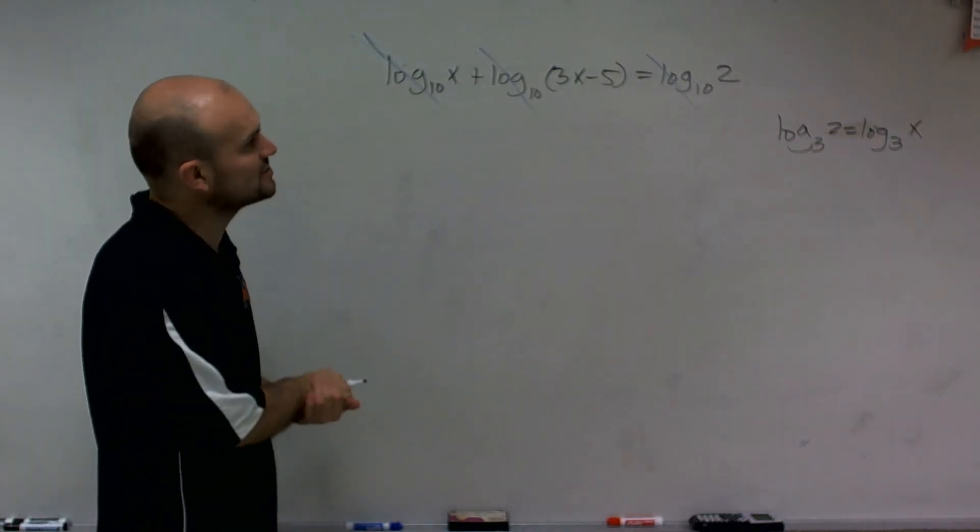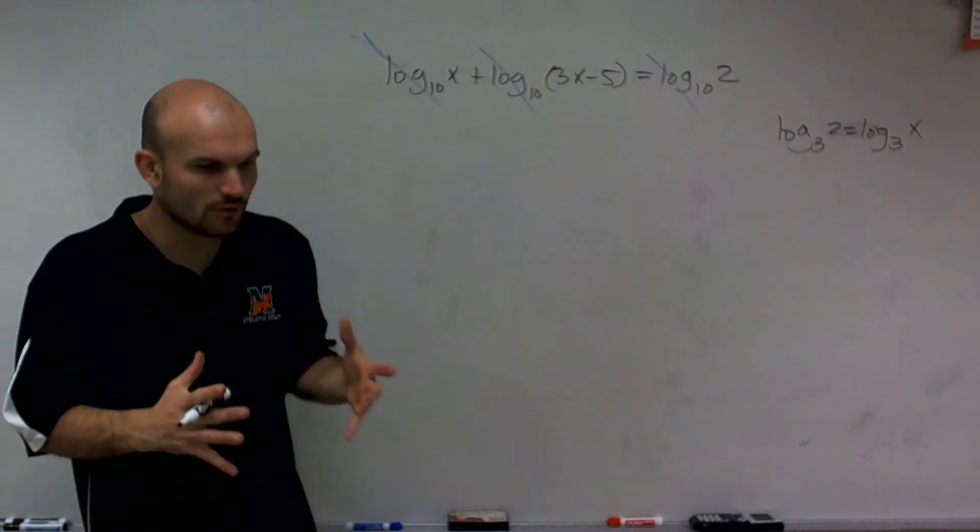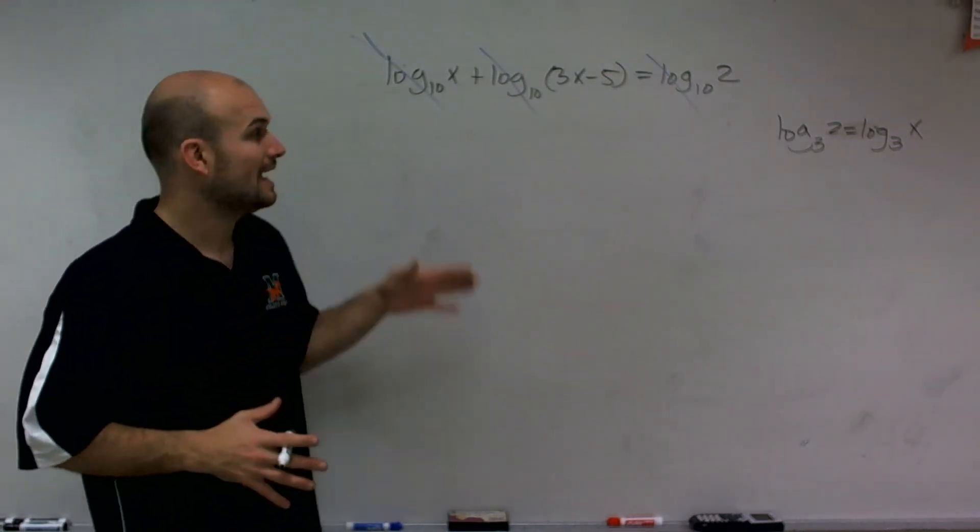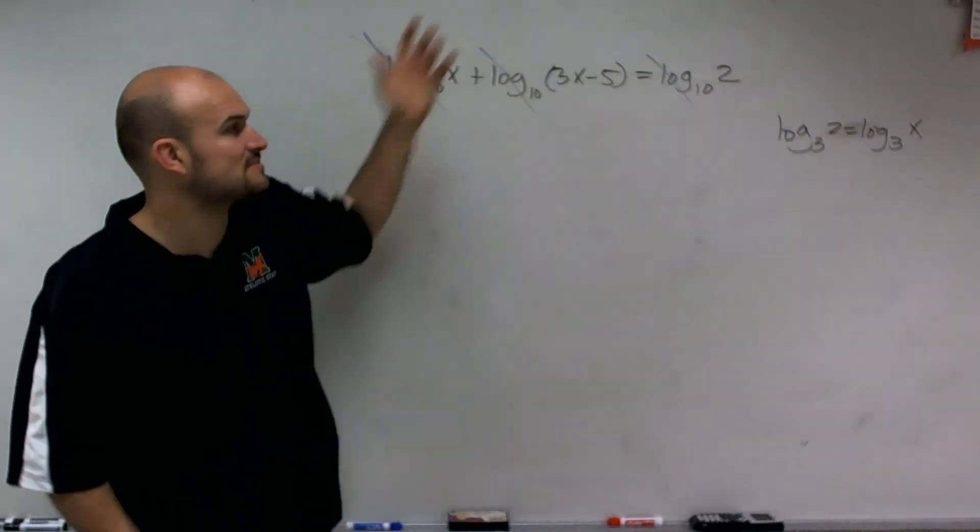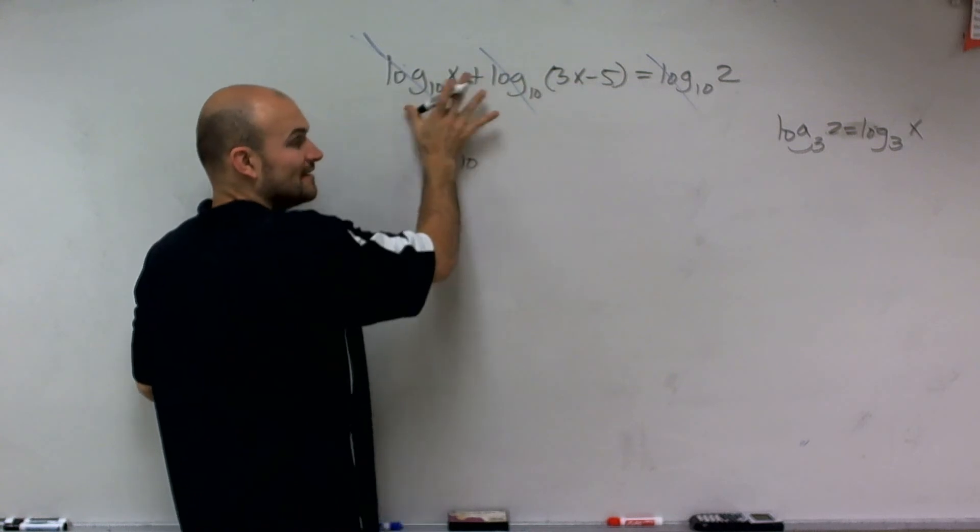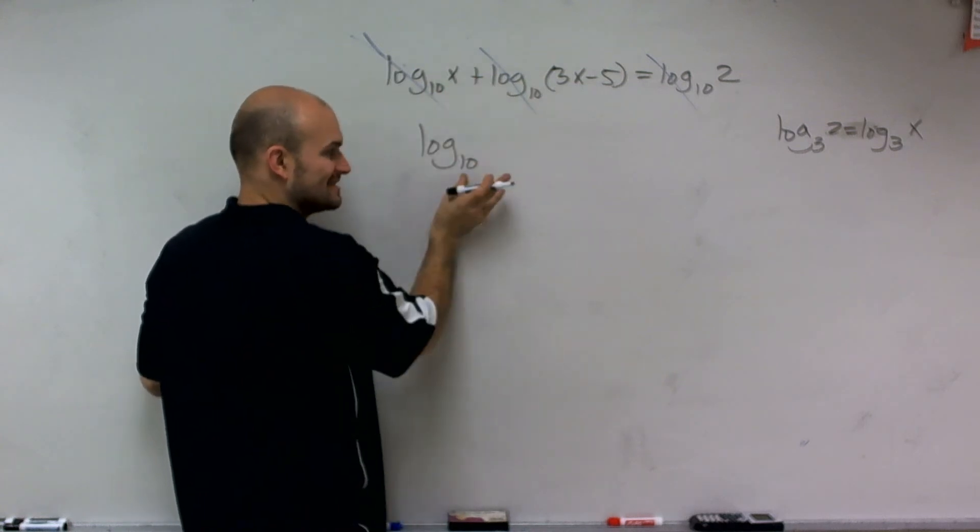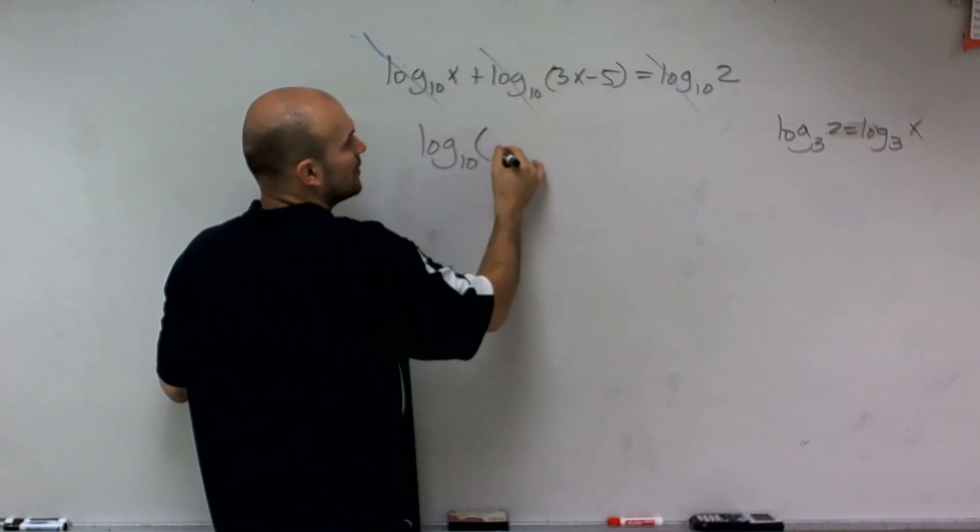So there's a couple of things we can look at right here. If you remember the properties of logarithms, what we had was the product rule. And what the product rule stated was, when I have the addition of two logarithms, I can rewrite that as one single logarithm. As long as I have the same base, I can rewrite that as a single logarithm with the exact same base as the product of the two logarithms.